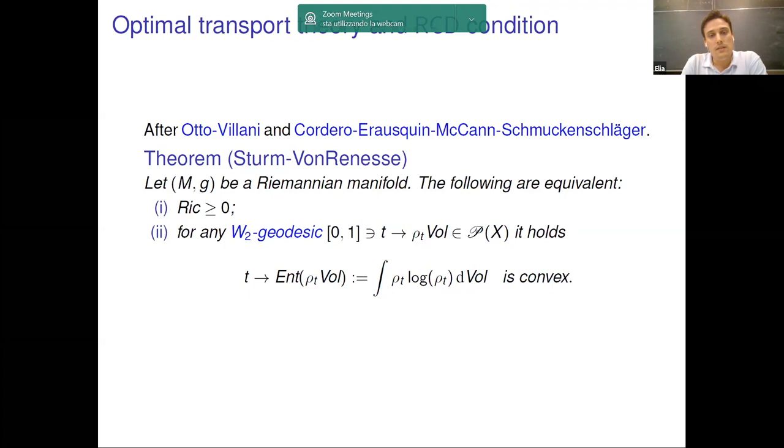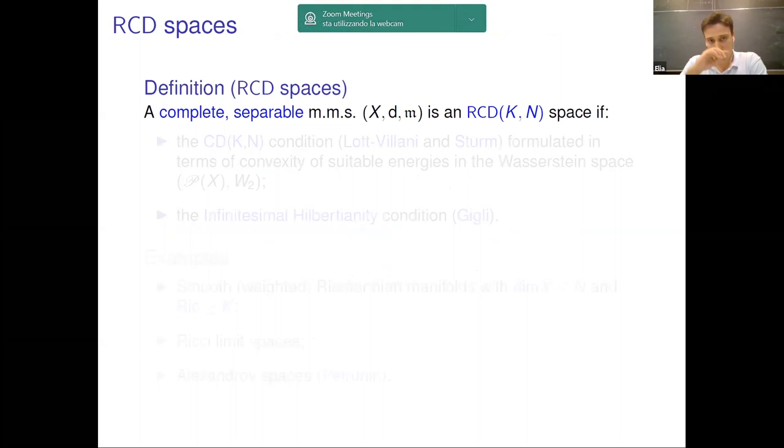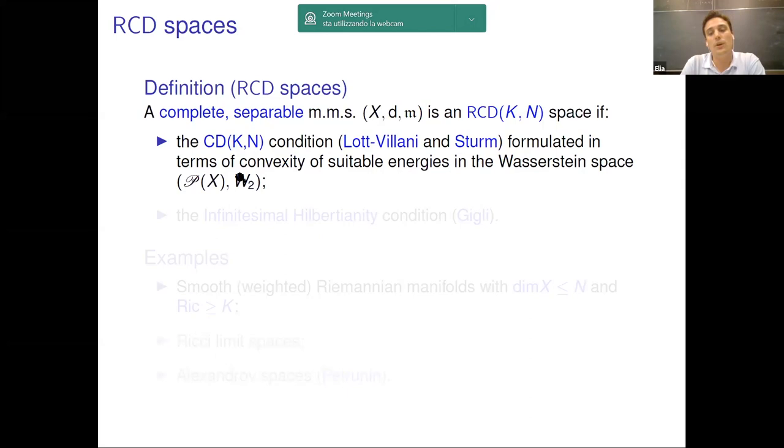The idea behind the notion of RCD spaces is just to take the second point of this theorem as a definition. Starting from a complete and separable metric measure space (X, d, m), we say that it is RCD(K, N) if it satisfies two conditions. The first one is precisely a generalization of point two in the previous theorem. This is the so-called curvature dimension condition. Here K stands for a lower bound on the Ricci curvature and N is the upper bound on the dimension. This condition has been formulated in this abstract setting independently by Lott, Villani, and Sturm. The second condition is the so-called infinitesimal Hilbertianity introduced by Gigli.